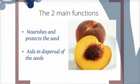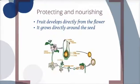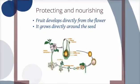Dispersal helps move the seed away from the parent plant so that when it grows up there isn't any competition between them. The fruit develops directly from the flower and it grows around the seed as a form of protection.